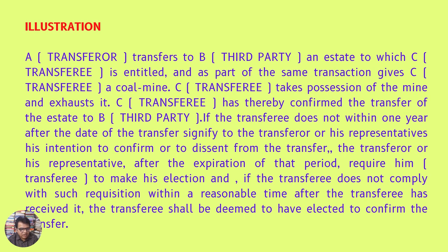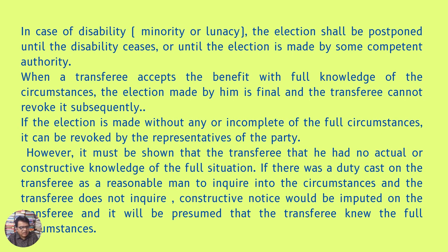Illustration A: A transfers to a third party an estate to which C the transferee is entitled, and as part of the same transaction gives C a coal mine. C takes possession of the mine and exhausts it; C has thereby confirmed the transfer of the estate to the third party. If the transferee does not within one year after the date of the transfer signify to the transferor or his representatives his intention to confirm or to dissent from the transfer, the transferor or his representative after the expiration of that period may require the transferee to make his election; and if the transferee does not comply with such requisition within a reasonable time after receiving it, the transferee shall be deemed to have elected to confirm the transfer.